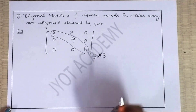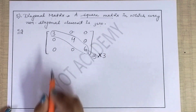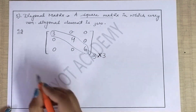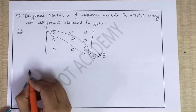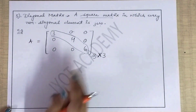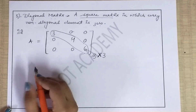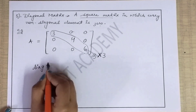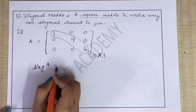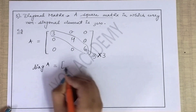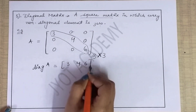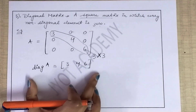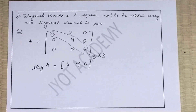Aapko yeh cheez dhyan rakhni hai ki diagonal elements kaunse hote hain. Agar mujhe is matrix mein batana hai ki diagonal element kya hai — suppose A ek mera matrix hai — toh diagonal elements ko aap is tarah likhenge: diag(A) = [3, 4, 6]. Yeh aapko batayega ki yeh diagonal elements hain.